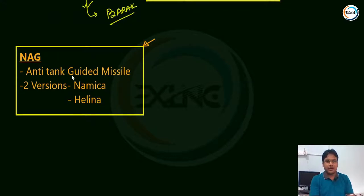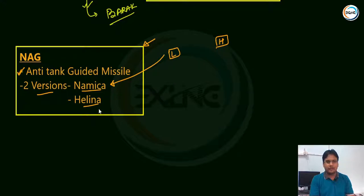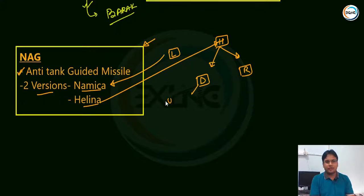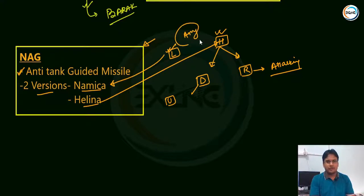The 5th component of IGMDP is the NAG anti-tank guided missile, which has two versions: Nemic (land version) and Helena (helicopter version). The land version Nemic is used by the army. Helena is used in two helicopters: Dhruv (utility helicopter) and Rudra (attack helicopter). These are the five components of the IGMDP program.